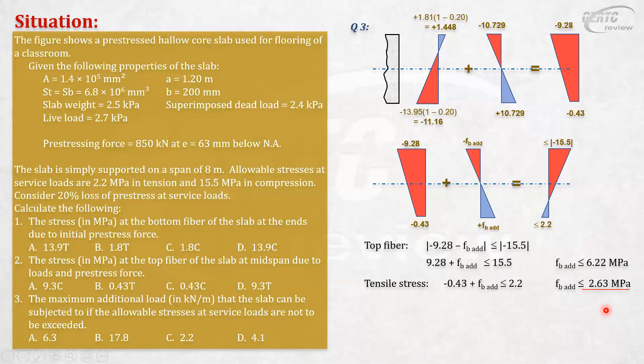Now between these two, which will govern? Usually the 2.63. Some people memorize to use the smaller value. But think about it: if you use 6.22 for compression, it's fine for compression because it won't exceed 15.5. But tension will complain, 'Oops, that's not allowed, it will be exceeded' if you use that value. So use the 2.63.